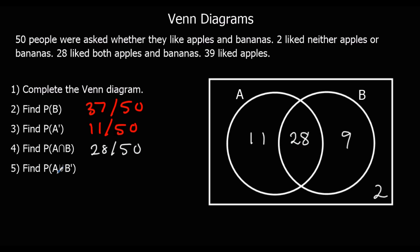And now we've got the union of A and not B. A is those sections and not B is those sections, so all added up — the union of these — we've got 41 people out of 50.